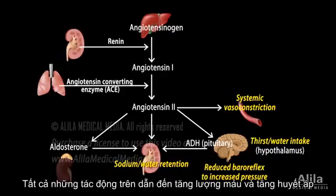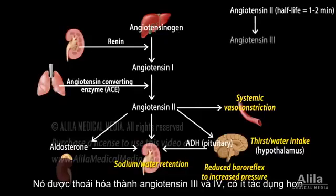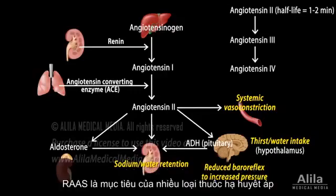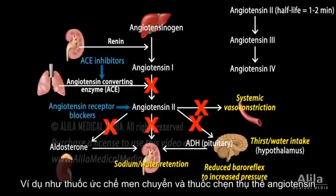All these actions lead to an increase in blood volume and blood pressure. Angiotensin 2 is short-lived with a half-life of 1 to 2 minutes. It is degraded into angiotensin 3 and 4, which have lesser effects. Overactive or inappropriately activated RAS is a cause for hypertension. RAS is a frequent target of antihypertensive drugs. ACE inhibitors and angiotensin receptor blockers are common treatments for hypertension.